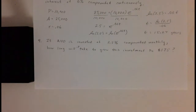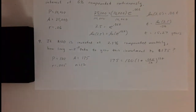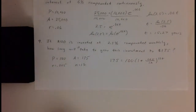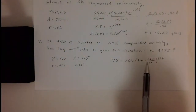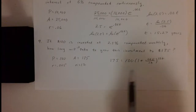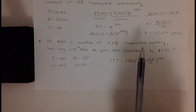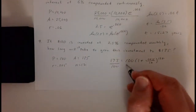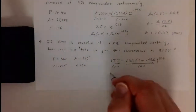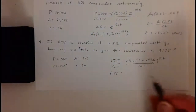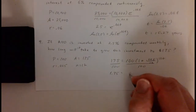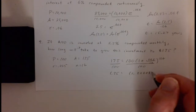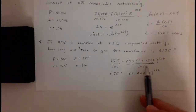For number nine, pause the video and think about it. Hopefully you found the values of A, P, R, and N, and we're solving for T. This is similar to the previous example except instead of e we have another number as the base — one plus point zero five over twelve, which evaluates to approximately one point zero zero two zero eight. We divide both sides by one hundred, giving us one point seven five equals one point zero zero two zero eight raised to the twelve T.